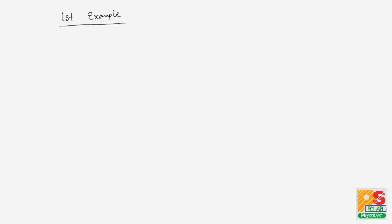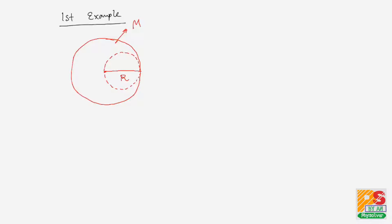For the first example: suppose a uniform semi-circular disc is given. The mass of this disc is capital M and the radius is capital R. From this disc, another small disc is punched out. The removed disc has a radius of R/2. Therefore the remaining part looks like this.